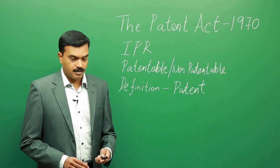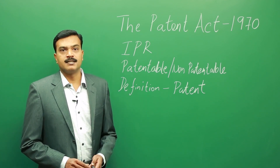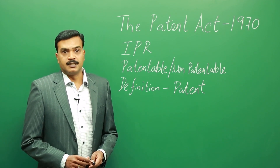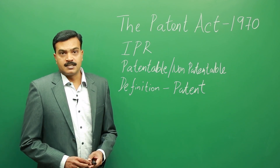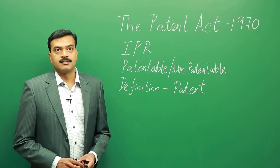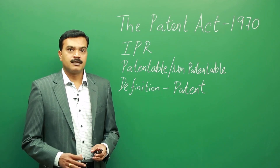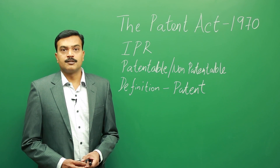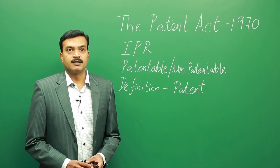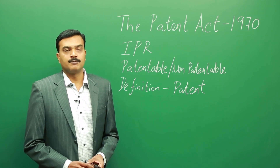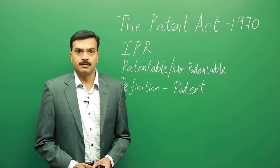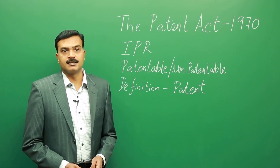Patent is one of several intellectual property rights. It is usually misunderstood that patent is the same as intellectual property right, or that all intellectual property rights are just patents. In fact, there are several IP rights other than patents — these include copyrights, trademarks, industrial designs, geographical indications, and trade secrets.